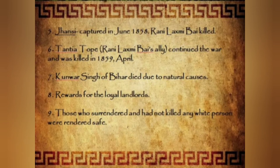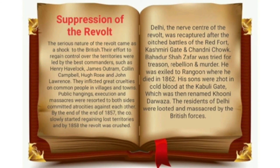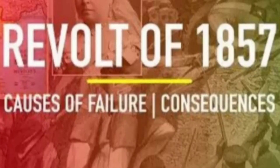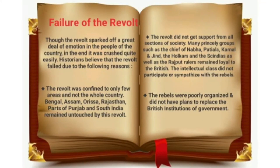The Revolt of 1857 lasted for more than a year and was suppressed by the middle of 1858. On July 8, 1858, fourteen months after the outbreak at Meerut, peace was finally proclaimed by Canning. Although the revolt was fairly widespread, a large part of the country remained unaffected. The revolt was mainly confined to the Doab region; Sindh, Rajputana, Kashmir, most of the Punjab, and the southern provinces did not take part — it failed to have the character of an all-India struggle. Important rulers like Scindia, Holkar, and the Rana of Jodhpur did not support the rebels.